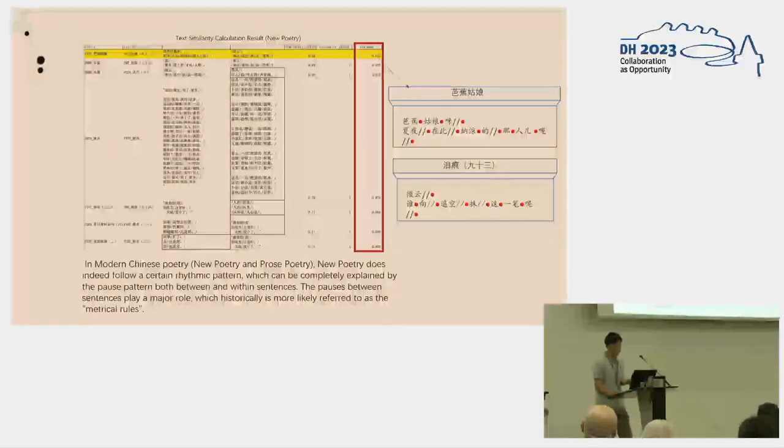To further validate this, we calculated the similarity between each poem in the corpus based on the rhythmic sequence. This table shows the result of the similarity calculations for neo-poems. By considering the examples on the right, we can see that we have calculated pairs of neo-poems that are highly similar in rhythmic features. Herein, the pause features between sentences played a major role. In contrast to neo-poems, the similarity among samples of prose poems is rather low, indicating that they don't adhere to a fixed metric pattern.